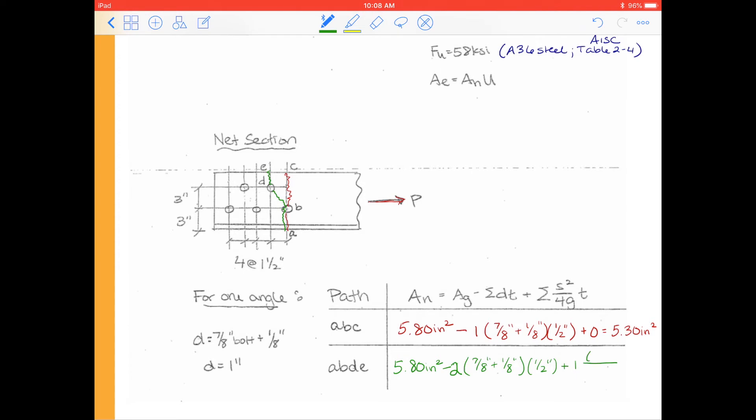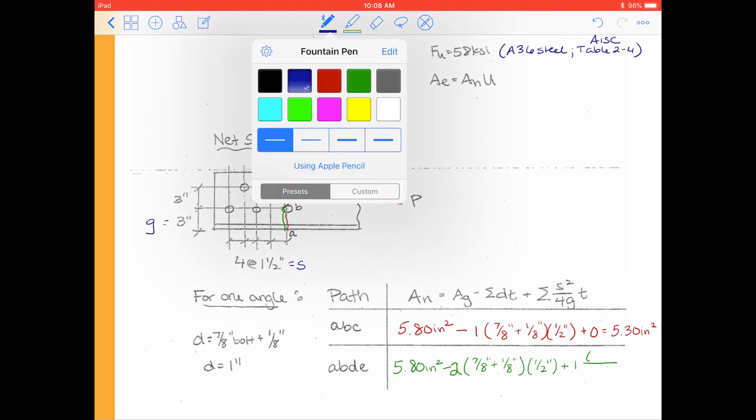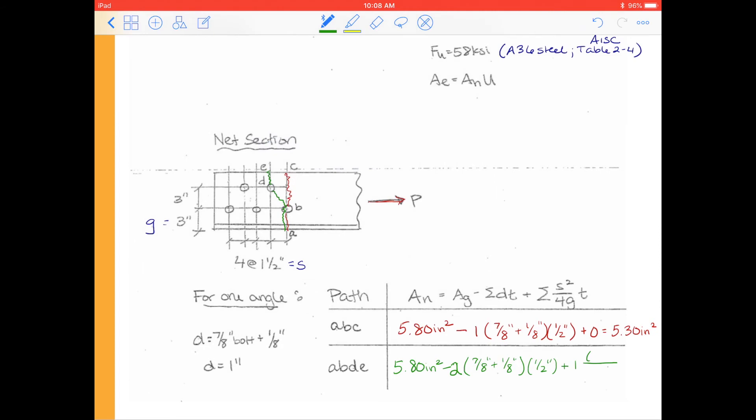So S, again, S is our longitudinal spacing or our stagger. And so this is going to be S, and then our gauge or our transverse spacing is going to be G. So we plug them into our S squared over 4G. So S is 1.5 inches squared over 4 times G, which is 3 inches. And we want to be careful here. We want specifically the G that went from bolt D to B. So that's 3 inches as well. So we're in particular looking for this G. Alright, and then we also multiply this by a half an inch.